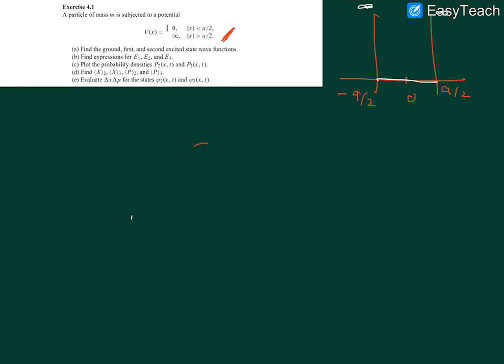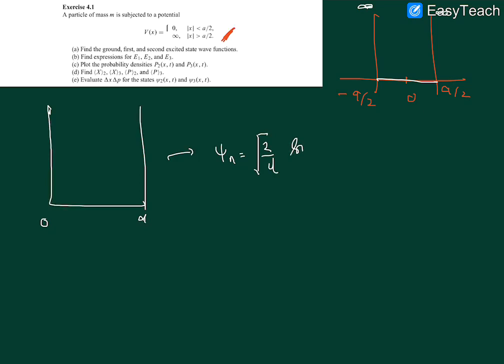I won't be going into each and every single mathematical detail, because that would extend the video for about an hour, but I will go through the main topics and how to get toward the answer. First, to find the ground state, let's remember that if our well is from zero to a, then the wave function of any nth state is ψ_n = √(2/l) sin(nπx/l).